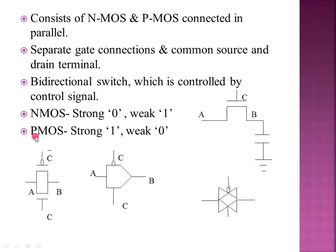So when the control is 0 we get 1, and this is a bi-directional switch which is controlled by the control signal. It will pass input A to output B. The path transfer logic uses both PMOS and NMOS, and this is the key difference from pass transistor logic.